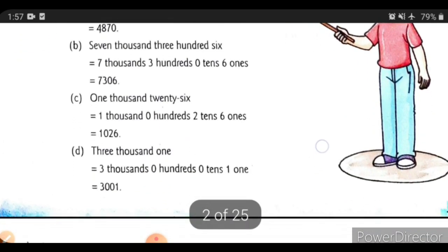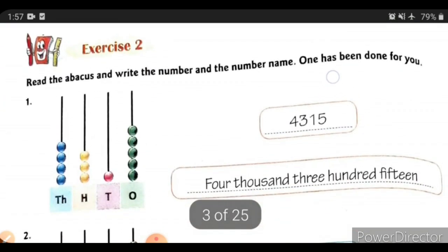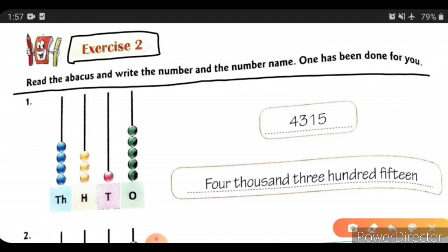Now we will see exercise number 2. The first question is: read the abacus and write the number and number name — number 1 has been done for you. So here we identify 1's place, 10's place, 100's place, and 1000's place. At 1's place, how many beads are there?